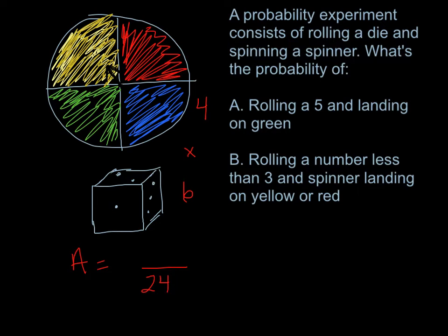Now I need to know how many of those 24 involve rolling a five and landing on green. There's only one way to roll a five, and there's only one green on the spinner. I multiply those options together just like I did the denominator — one times one is one. So one divided by 24, which gives us 0.042. That's the answer to Part A: rolling a five and landing on green.